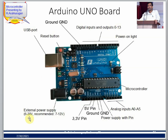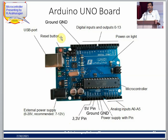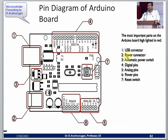The Arduino board has the following pin configuration: the ATmega controller IC, analog input pins, power supply pins (5V and 3.3V), ground terminals, a USB port, a reset button, ground pins, and digital output pins. These are the main features of the Arduino board.